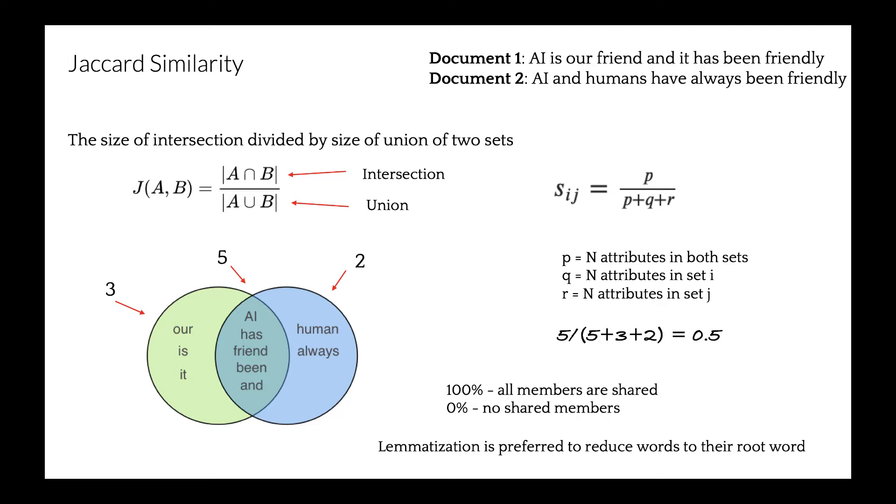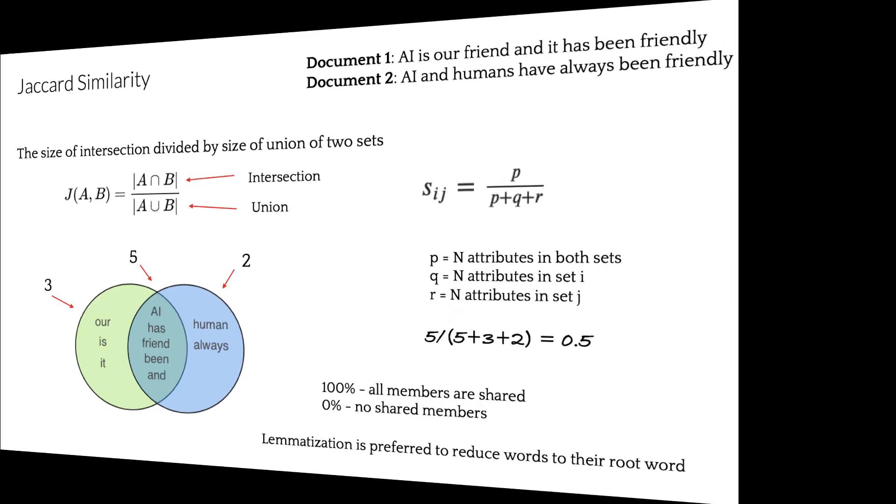For these two documents, we can calculate Jaccard similarity as five, which is total number of shared words, divided by total number of all words in both sets, plus number of words in the first set unshared, and number of words in the second set unshared. So, five divided by sum of five, three, and two, which gives us 0.5, 50%. Two sets share half of the members.